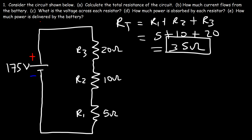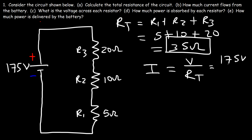Now let's move on to part B and calculate the total current. That's going to be the voltage of the battery divided by the total resistance: 175 volts divided by 35 ohms. The current that flows in this circuit is equal to 5 amps.